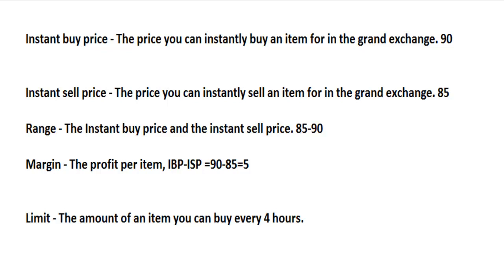The range is the Instant Buy price and the Instant Sell price — the prices that an item is currently being traded for. So the range might be 85 to 90. The margin is the profit per item, which is the Instant Buy price minus the Instant Sell price — for our fictional item that would be 5GP, as 90 minus 85 is 5. Finally, the limit of an item is the amount you can buy every 4 hours. If a limit is 10 and you buy 10, you can't buy more for 4 hours, but if you sold 5 you could buy another 5 back, meaning you can flip constantly throughout the day.